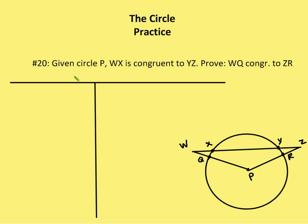So, I have given circle P, so I have circle P, WX is congruent, so WX is congruent to YZ. We're going to prove that WQ is congruent to ZR, so WQ is congruent to ZR.